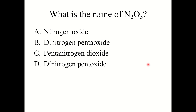Let's try a quick knowledge check. What is the name of N2O5? The correct answer is D: dinitrogen pentoxide. Some people may have chosen B — remember you leave off the A with oxide, so it's pentoxide, not pentaoxide. D is the correct answer.